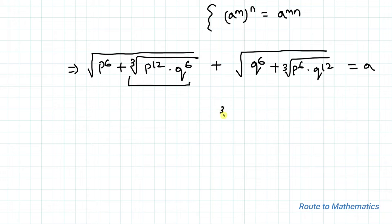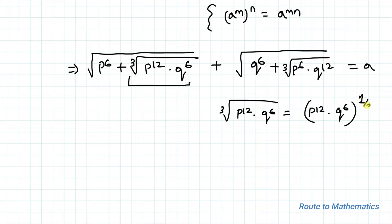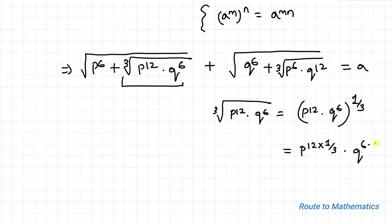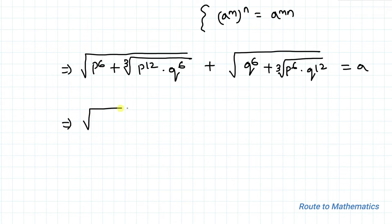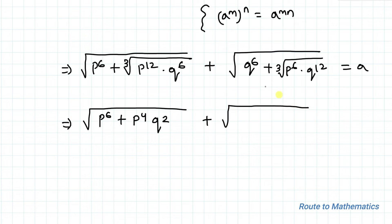The cube root term (p¹² · q⁶)^(1/3) simplifies by applying the same exponential rule: the exponents 12 and 6 are divided by 3, giving p⁴q². So the equation becomes √(p⁶ + p⁴q²) + √(q⁶ + p²q⁴) = a.